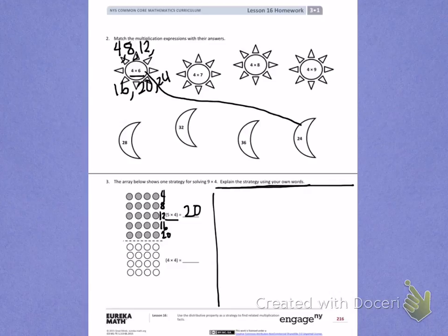On the bottom, I have 4 times 4, so I will skip count by 4s until I get my product. 4, 8, 12, 16. 4 times 4 is 16.